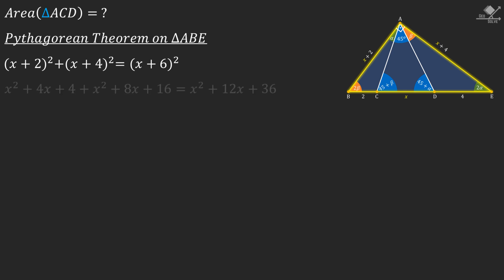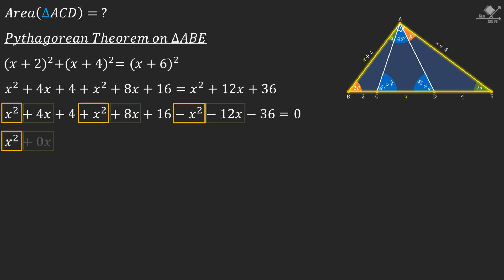Now let's take the squares of parentheses on both sides and subtract right hand side of the equation from both sides. From here x² + x² - x² will be x². And 4x + 8x - 12x will cancel out. 4 + 16 - 36 will be -16. So our final equation will be x² - 16 = 0.